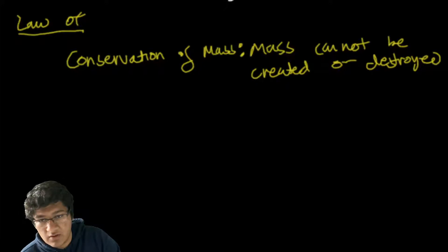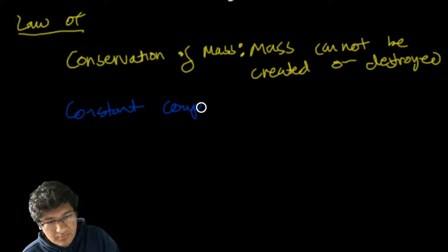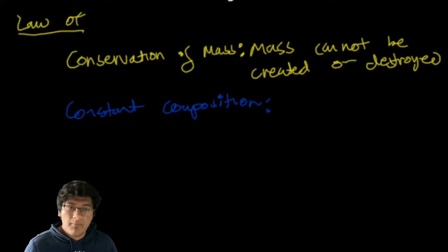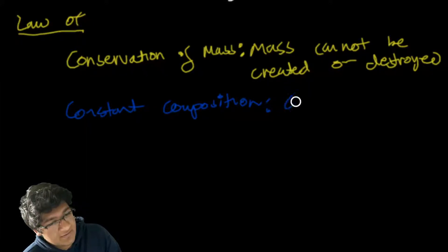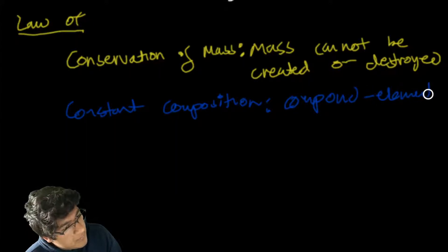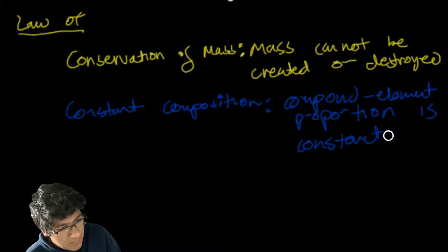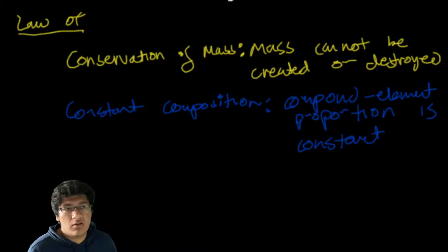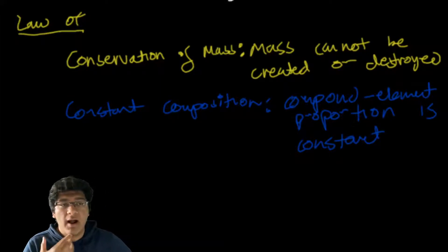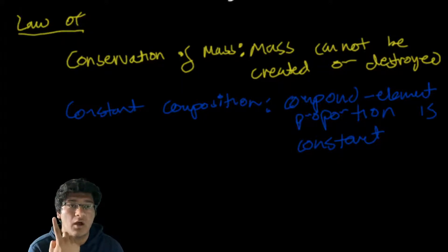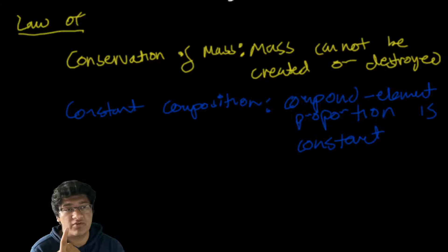The next law is constant composition. Constant composition says that a given compound will always be in the same proportion of elements by mass. This ties into what an empirical formula is. Basically, compound element proportion is constant.